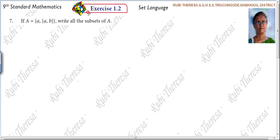Kanna, Papo, listen here. This is Ruby Teresa. Seventh problem. If A = {a, {a,b}}, write all the subsets of A.